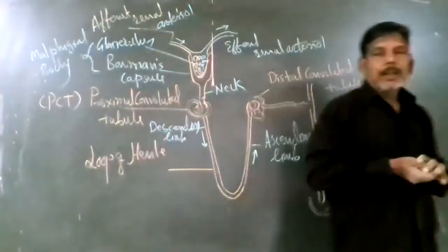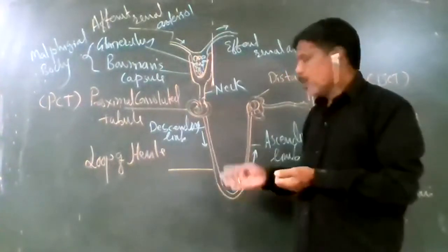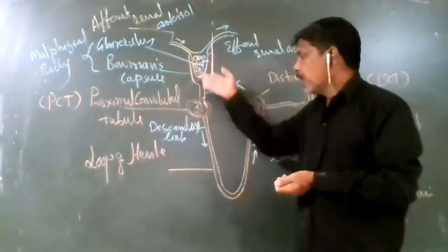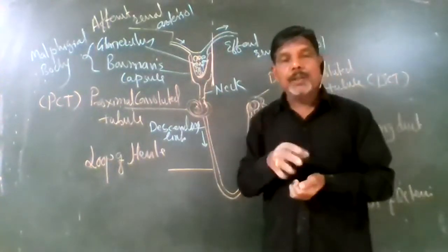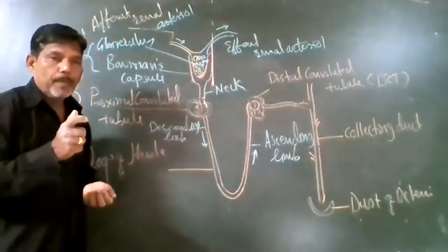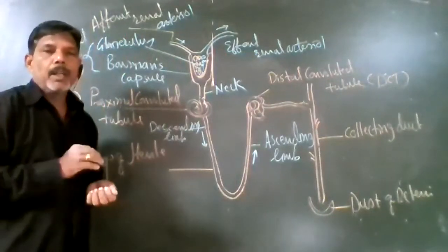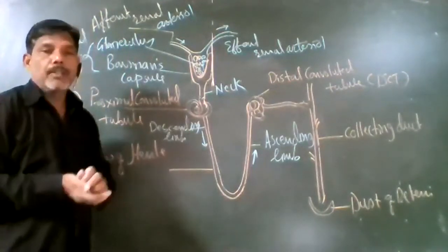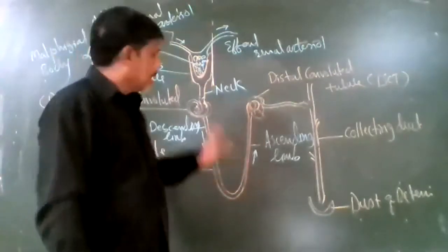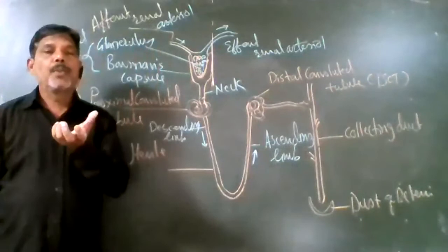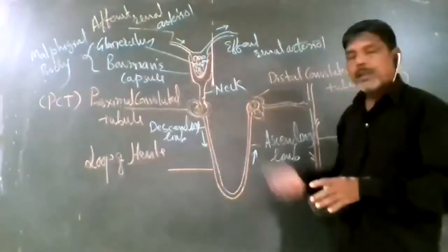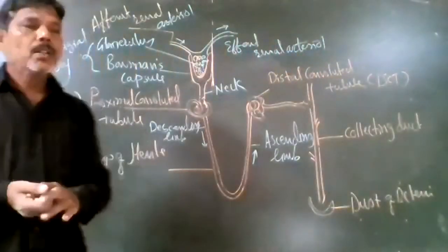In diabetes, the sugar level adjustment is abnormal due to malfunction of the pancreas. Blood containing excess sugar is eliminated from the body, and this condition is called diabetes mellitus. Some proteins are also abnormally eliminated from the body, and this is called albuminuria. These disorders occur due to higher concentration of these components in the blood. The main function of the kidney is urine formation, and the nephrons are the basic structural and functional unit of the kidney.